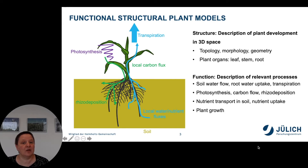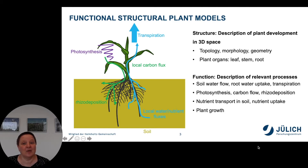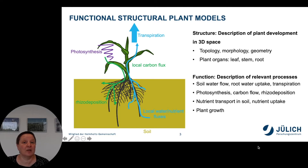Functional structural plant models have two parts, namely the structure and the function. By structure we mean the description of plant development in three-dimensional space, such as topology, morphology, and geometry of the different plant organs such as leaf, stem, or root.